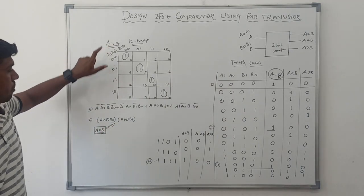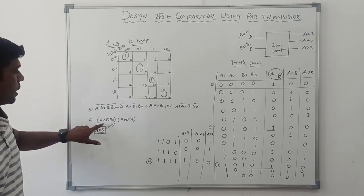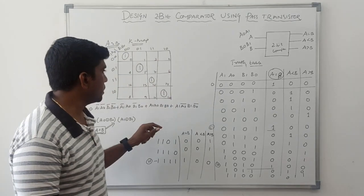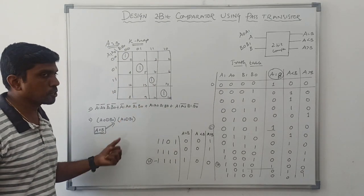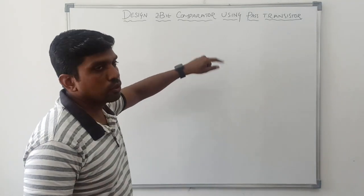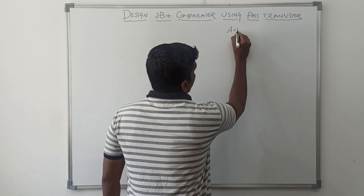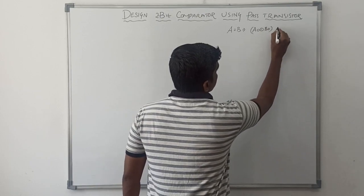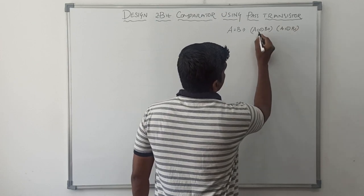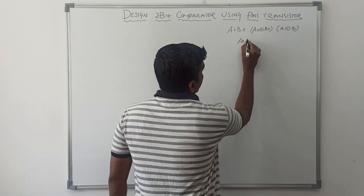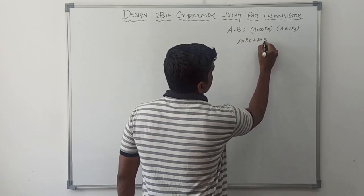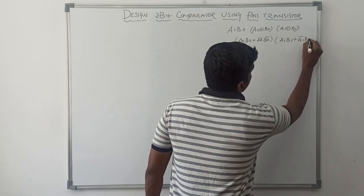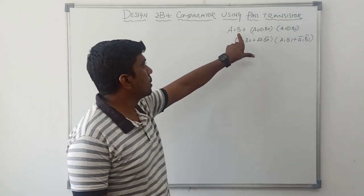When in this two-bit comparator A value is equal to B value, the corresponding Boolean expression is: A0 XNOR B0, A1 XNOR B1. Now I am going to draw the pass transistor logic for this expression. The Boolean expression for A equal to B is A0 XNOR B0 · A1 XNOR B1. The expansion of this expression is: (A0·B0 + A0 bar·B0 bar) · (A1·B1 + A1 bar·B1 bar).